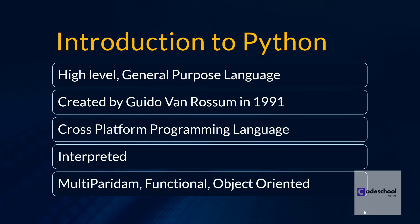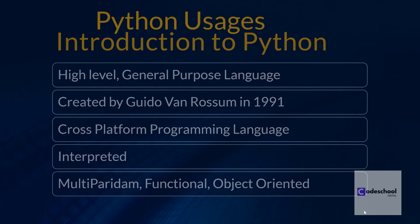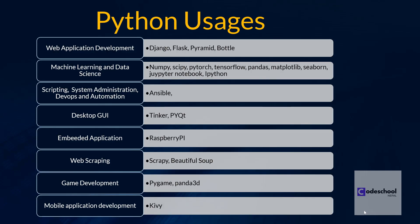Now let's look at the scope of Python — the major areas where Python is used. One of the major uses is web application development. We can use frameworks like Django, which is a 'batteries-included' framework, and Flask, which is a micro-framework. These frameworks provide integrated tools and design patterns to develop web applications, so we can develop websites and web-based applications using Python with these frameworks.